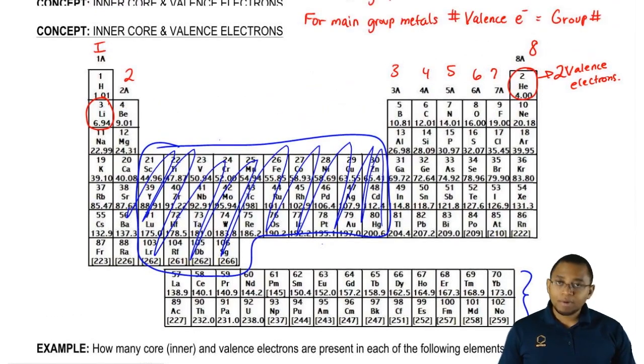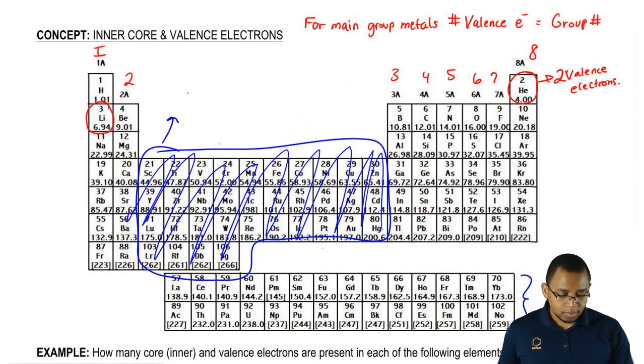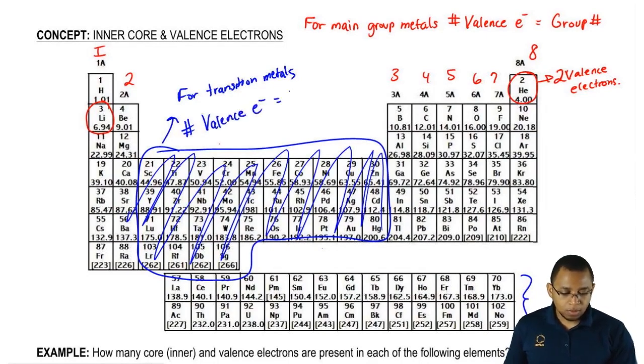And we'd simply say that their number of valence electrons, so for transition metals, these transition metals, we're going to say number of valence electrons equals number of electrons in the S and D orbitals.